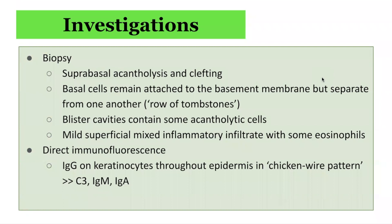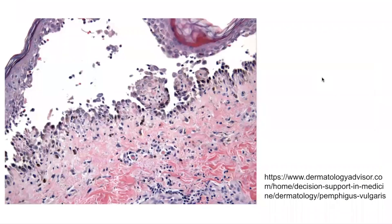Direct immunofluorescence often demonstrates IgG on keratinocytes throughout the epidermis in a chicken-wiring pattern. The staining may be more significant on the lower aspect of the epidermis. A histological slide demonstrates suprabasal acantholysis — a level of split above the basal layer resulting from loss of intercellular adhesion between keratinocytes — causing a blister just above the basal layer. The basal keratinocytes remain attached to the basement membrane zone via the hemidesmosomes but lose attachment to one another, showing the characteristic row-of-tombstones appearance.